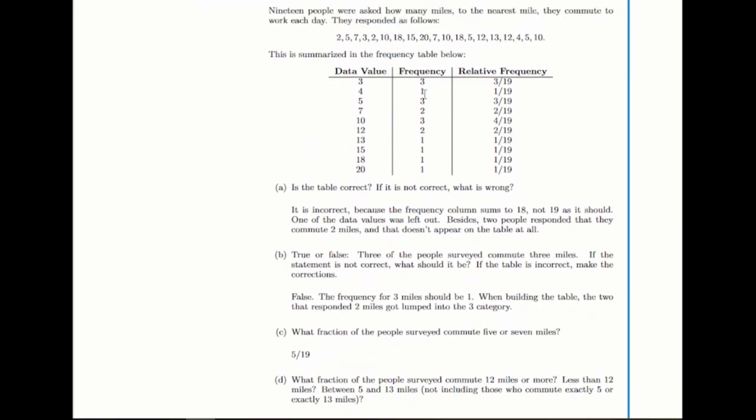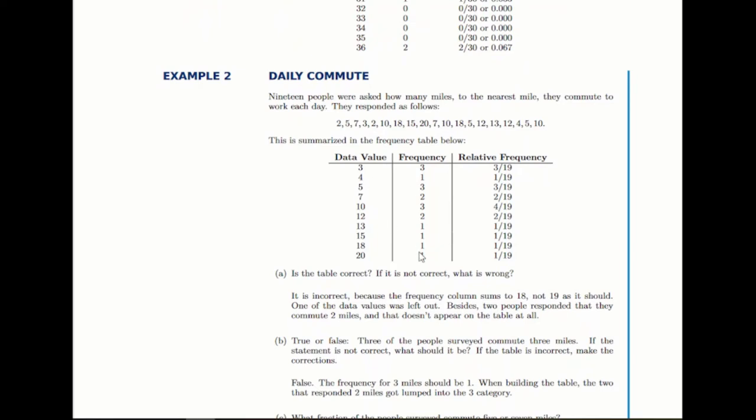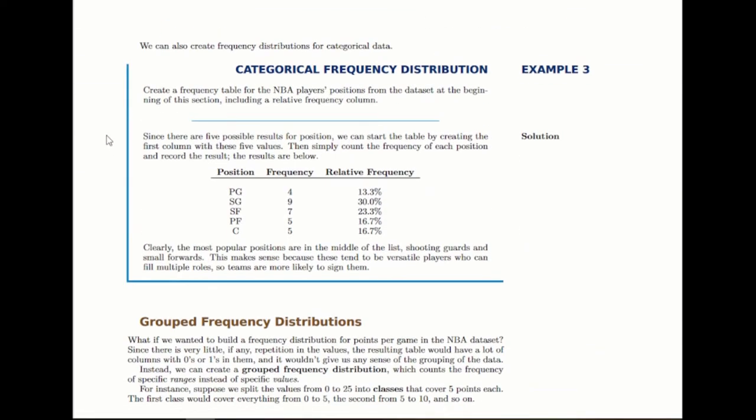You have another example here of a frequency table, where we're just counting the frequencies and writing down the relative frequencies as well. In this case, you're looking through and looking for mistakes in the table, but it's the same idea. You can also do frequency tables or frequency distributions for categorical data. You just list the categories, and then the frequency, the number of times each one appears.